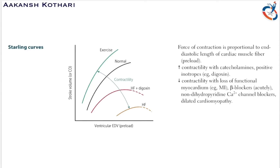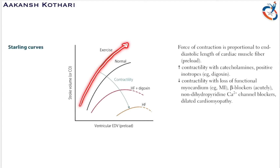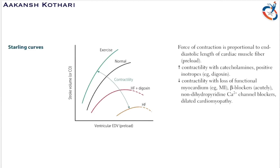Plotting the graph between the stroke volume or the cardiac output with the end diastolic volume or the preload, we get this kind of a graph. This is the normal Starling curve. When there is an increase in the contractility, such as during exercise, the graph shifts towards the left, meaning stroke volume increases even with a small preload.